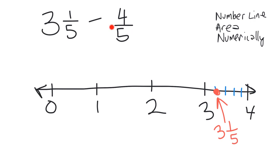This four-fifths says we're supposed to go backwards four-fifths of a hop. To go from here to here, that's one-fifth, but then I need to go three more fifths. So I'm going to have to subdivide this whole interval into fifths: one, two, three, four, five. Now I have enough fifths to go backwards four-fifths.